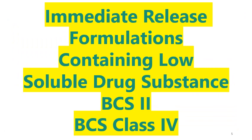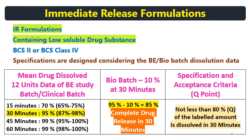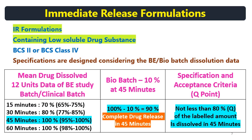For immediate release formulations containing low soluble drug substances belonging to BCS Class 2 and 4, in Example 1, complete release happens in 30 minutes. Though the formulation contains an insoluble drug substance, complete release is still achieved in 30 minutes, so 95% minus 10% gives 85%, and you can give 80% Q at 30 minutes. In Example 2, if the drug is slowly dissolving and belongs to an insoluble type of molecule, complete release happens at 45 minutes, and you can give a Q point of 80% at 45 minutes.